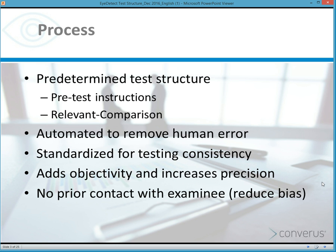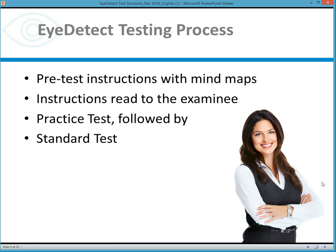Because there's no contact between the person scoring the test and the examinee, bias is reduced. The standard testing process for an iDetect test is that the examinee sits down at the computer, the test begins, and pre-test instructions are given using mind maps. Instructions are essentially read to the examinee, giving them an overview of what the test topic or test content is about.